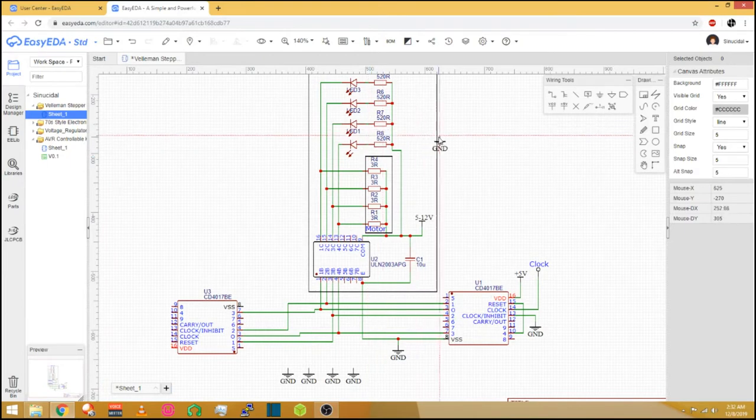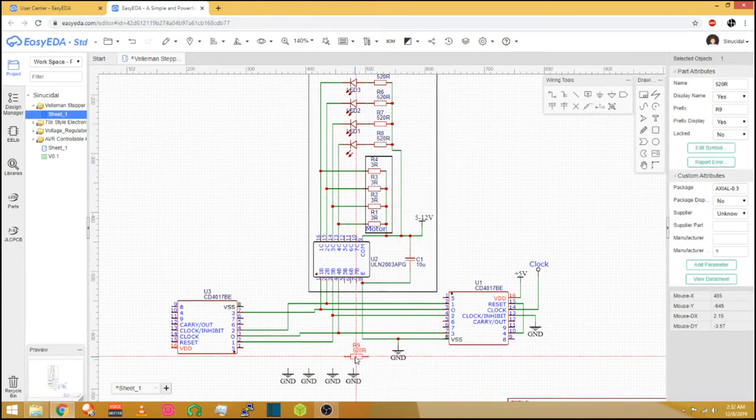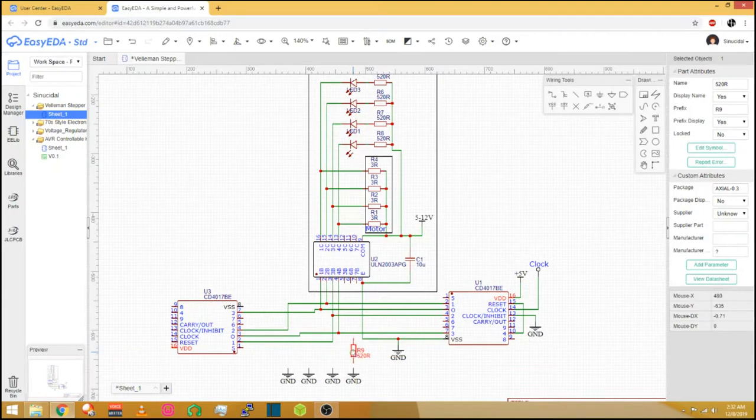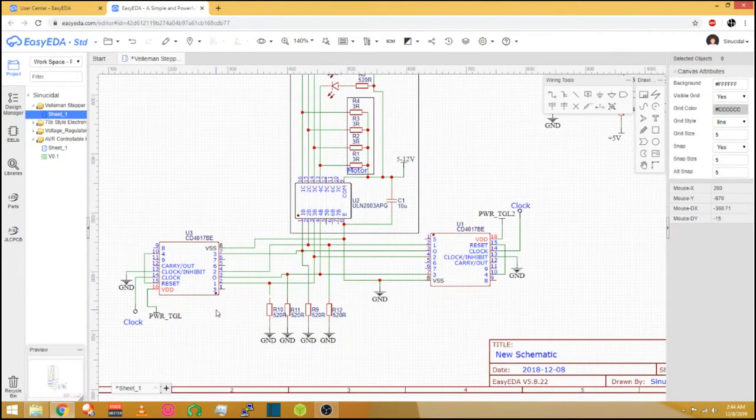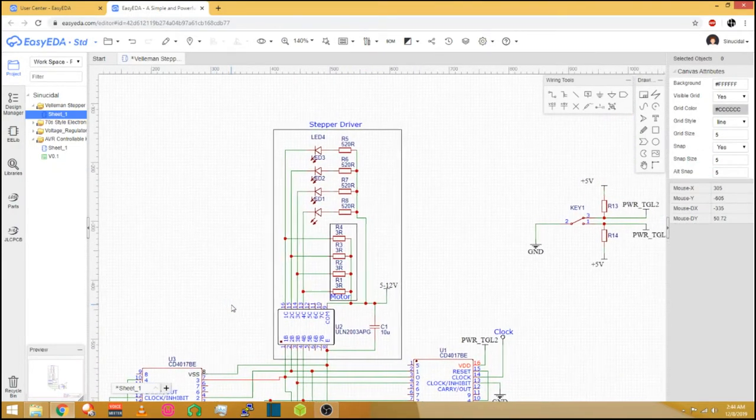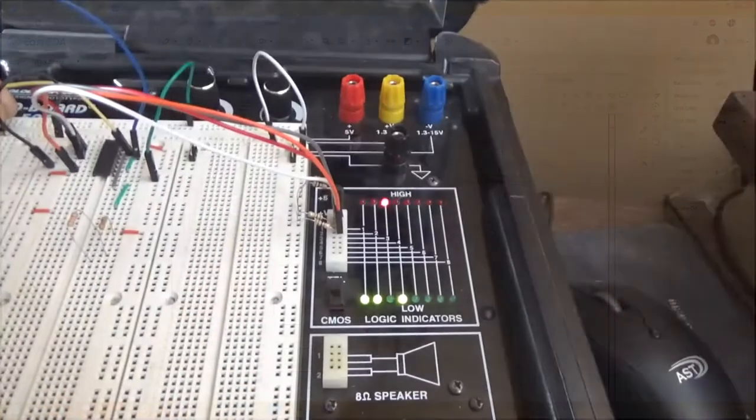Since all the pins will be defaulted to low we should be able to eliminate this by pulling each output to ground through a resistor. And that should do it. But it doesn't.